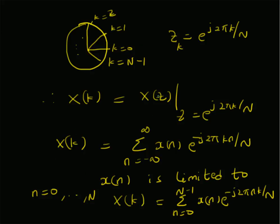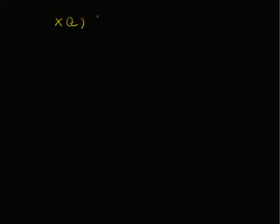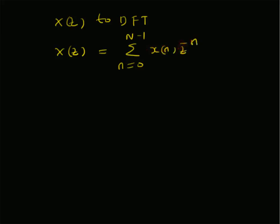Now, let us look at the derivation of the Z-transform from the DFT. That is, now we want to relate X(Z) to the DFT — how can we derive X(Z) from X(k)? Recall the definition of X(Z): summation from n = 0 to N-1 of X(n) · Z^(-n). Since X(n) is limited to the interval 0 to N-1, we have this definition.